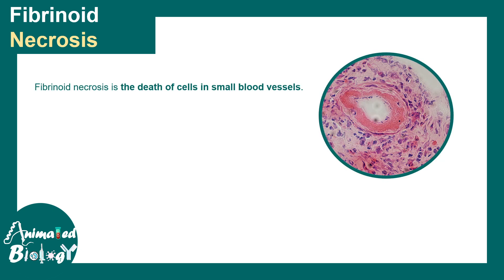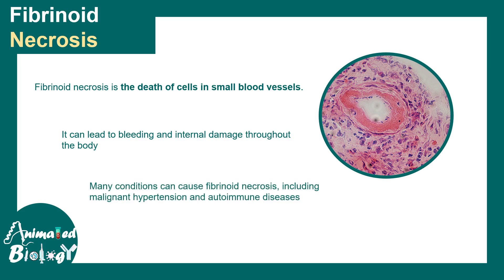Fibrinoid necrosis involves death of cells in the small blood vessels and can lead to bleeding and internal hemorrhage throughout the body. Causes include severe hypertension — where extremely elevated blood pressure leads to death of capillary cells — and autoimmune diseases that deposit immune complexes in blood vessels, thereby damaging them.